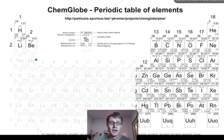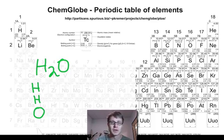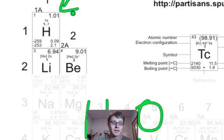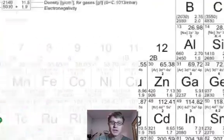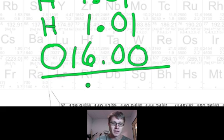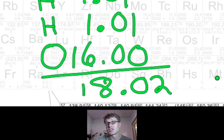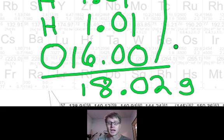To find the formula mass of H2O: H2O has two hydrogens and one oxygen. Each hydrogen has a mass of 1.01 on the periodic table, so two hydrogens give 2.02. Oxygen has a mass of 16.00. Adding those up, the formula mass of water is 18.02. So one mole of water has a mass of 18.02 grams. You'll need to do this — get out a periodic table and find the formula mass — whenever you go from moles to grams.